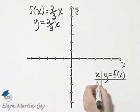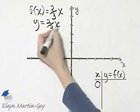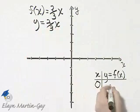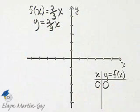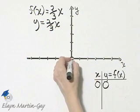Notice if I let x be zero, if x is zero, two-thirds times zero is zero, so this graph goes through the origin, which means the x-intercept is zero and the y-intercept is zero.